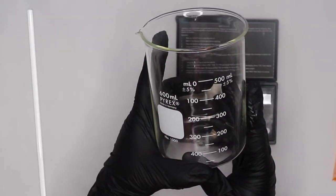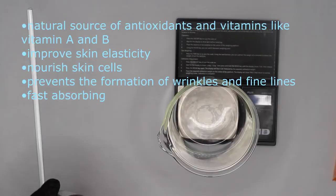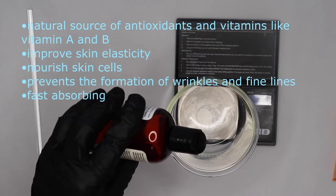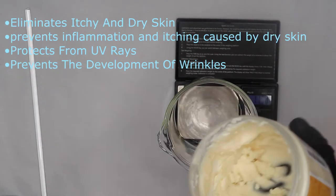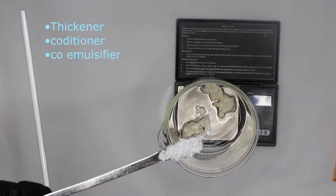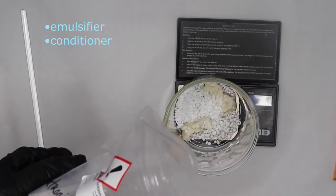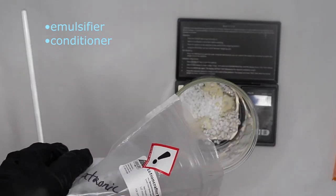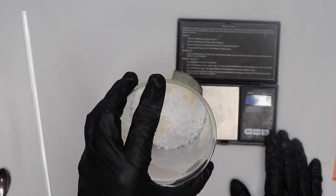Okay, for my oil phase I am using a 500 milliliter beaker. So 12 grams of camellia oil, 7.2 grams of mango butter, 7.2 grams of cetyl alcohol, 12 grams of BTMS 50. Okay, so I am going to go ahead and put my oil phase aside.